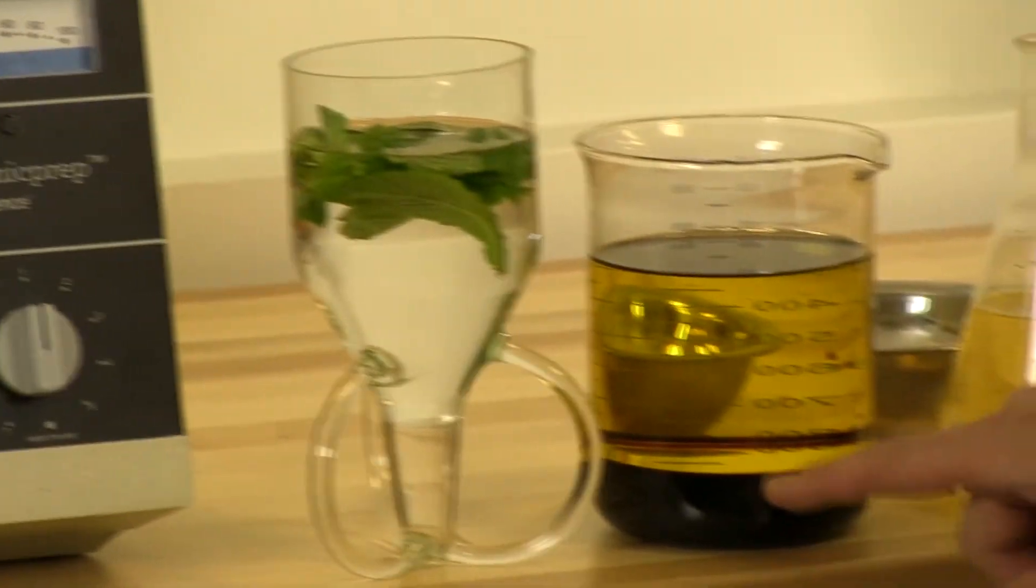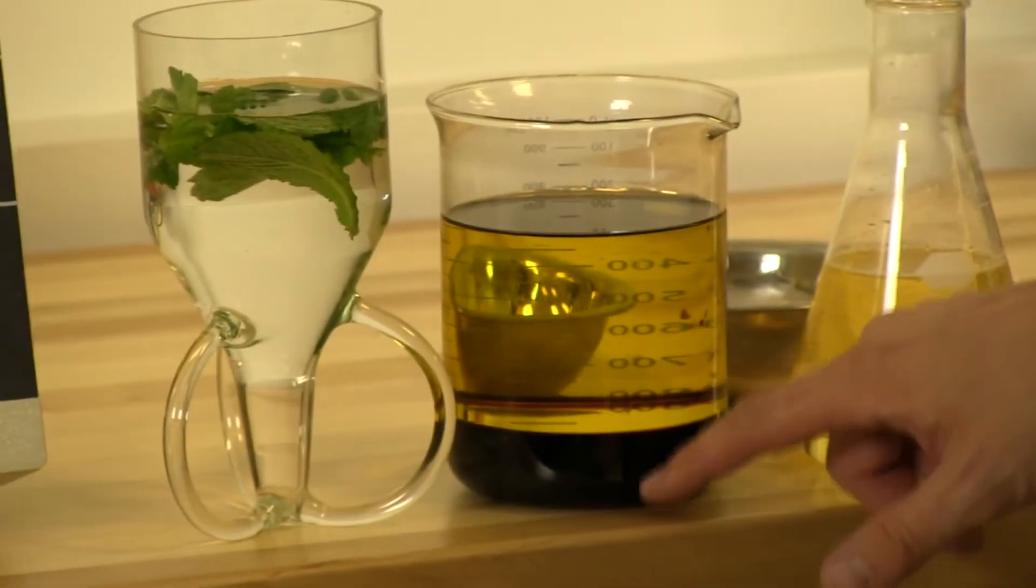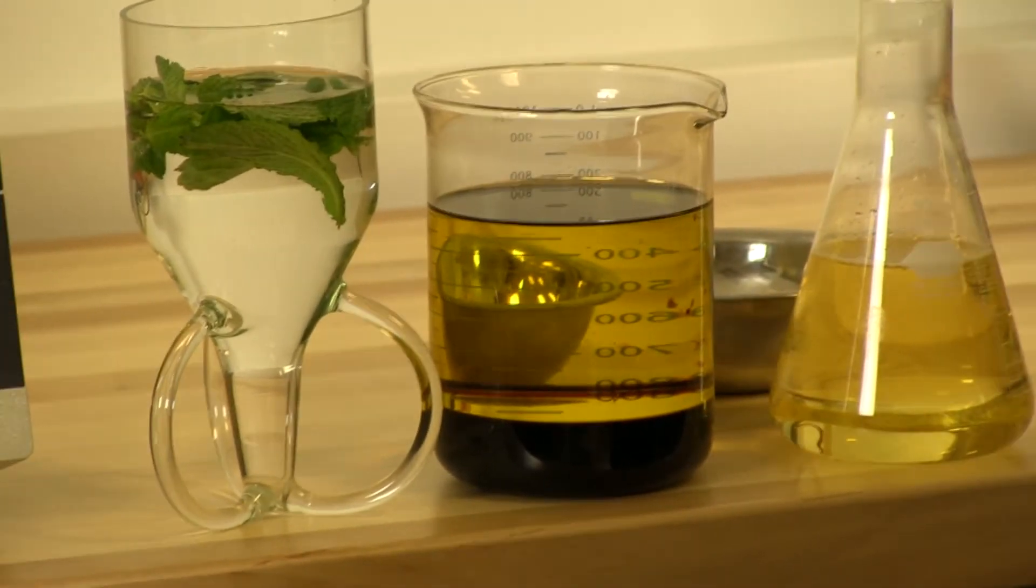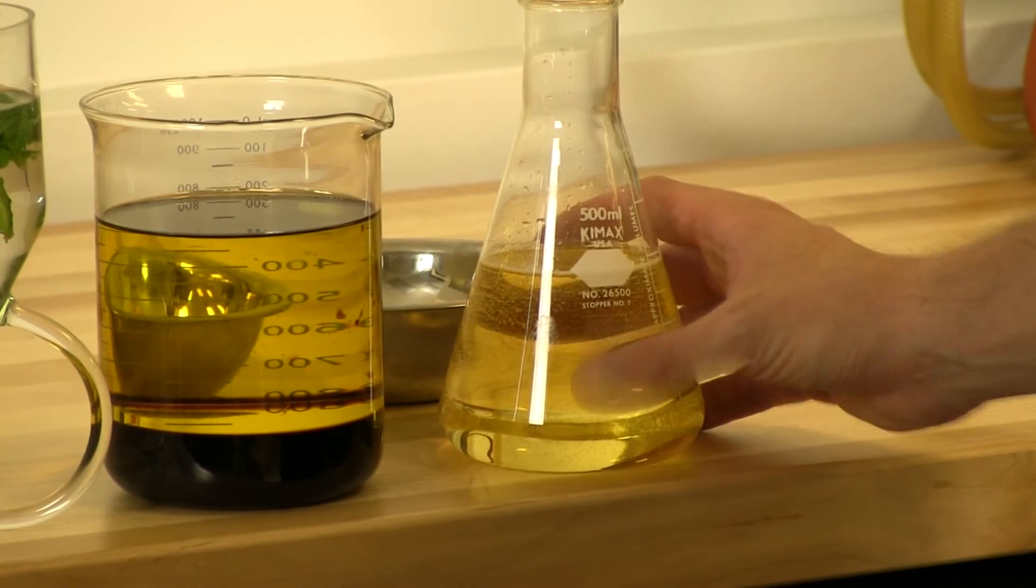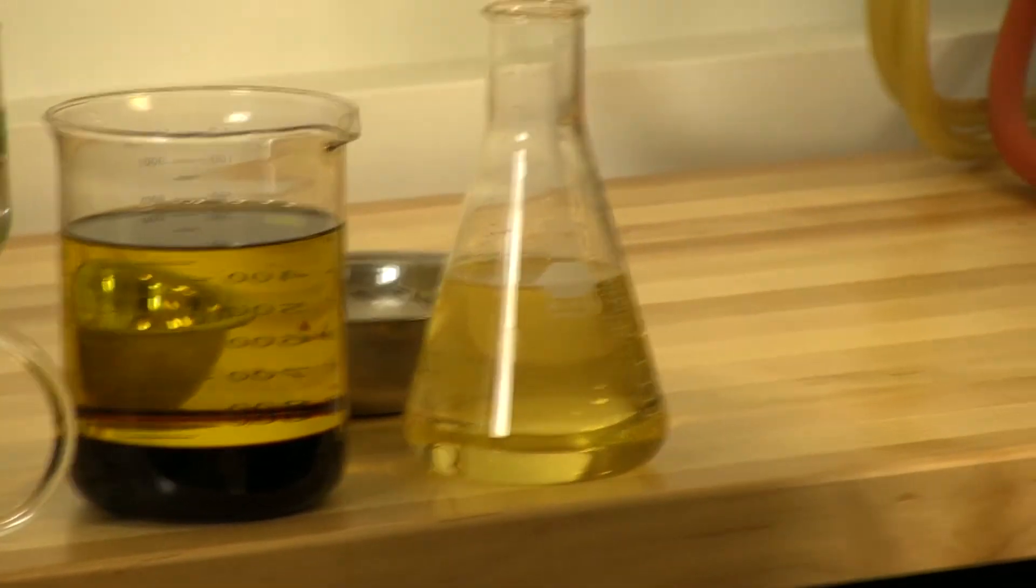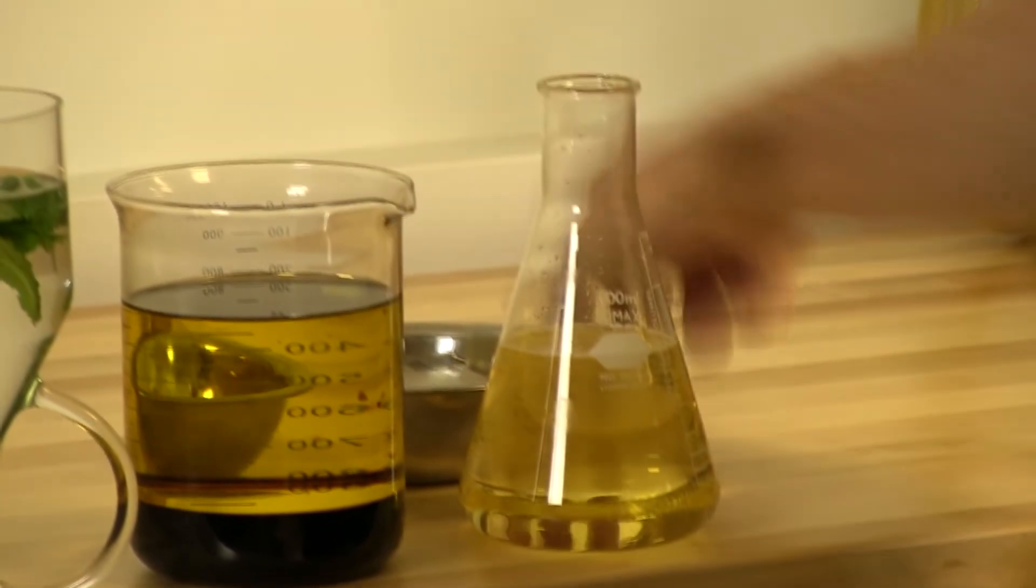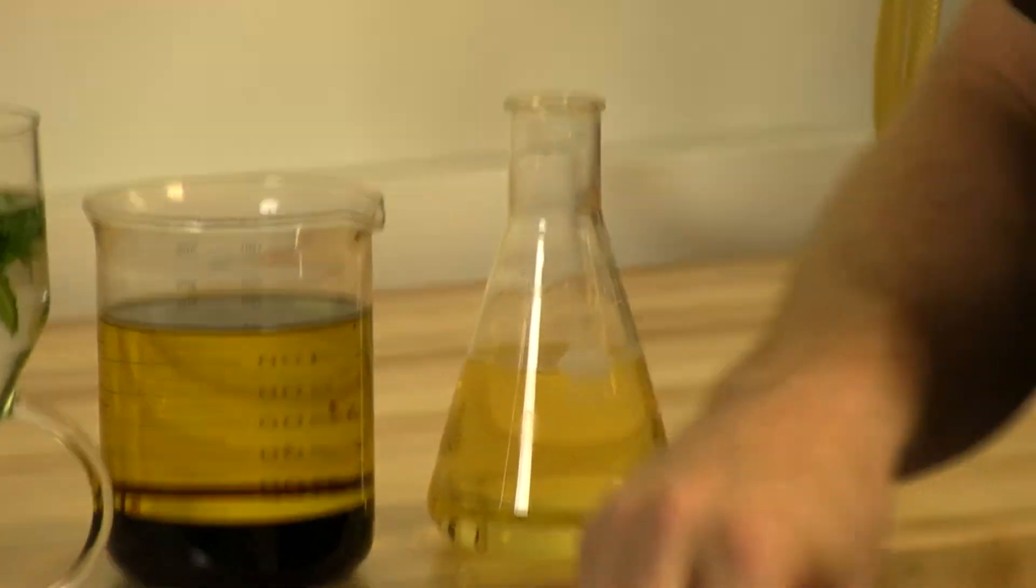We have balsamic and olive oil in a typical ratio, 3 to 1 ratio. And we have un-oaked Chardonnay, and what we're going to do is rapidly barrel-age it using some oak chips.